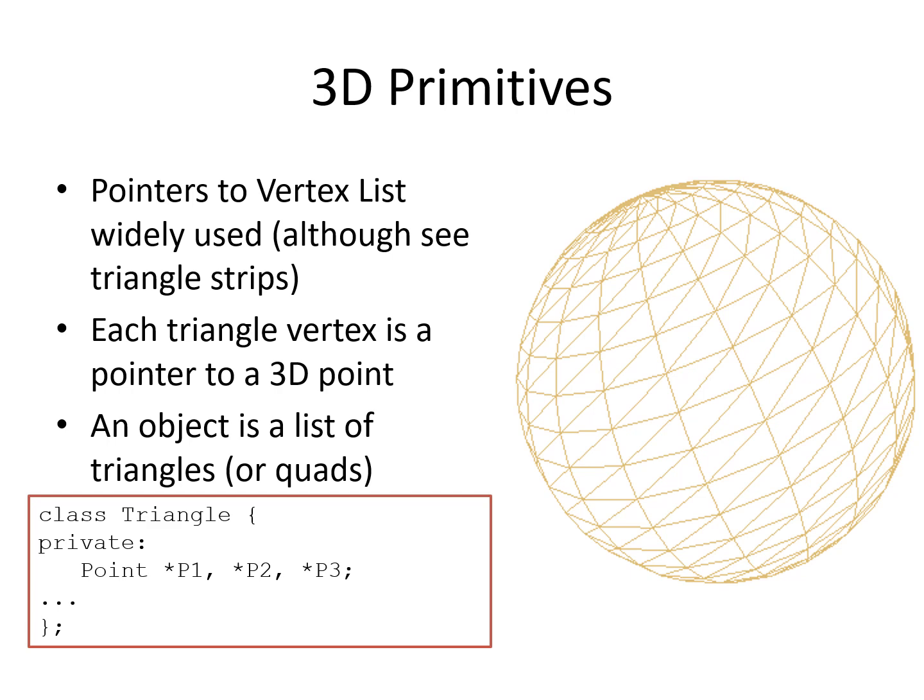Here is a triangle class. The star operator indicates that these are now pointers to points rather than the points themselves. A pointer in 32-bit memory will be 4 bytes. Therefore, the pointer-to-vertex memory version of a triangle at 12 bytes will take less space in comparison to a triangle with the three points themselves in the class, which was 36 bytes. But we must bear in mind the cost of storing the vertices elsewhere.